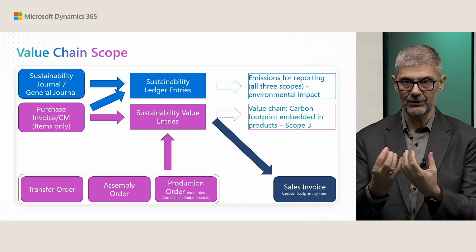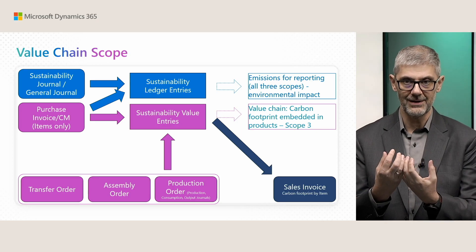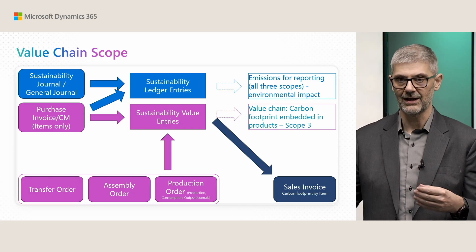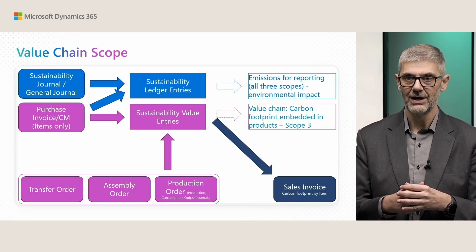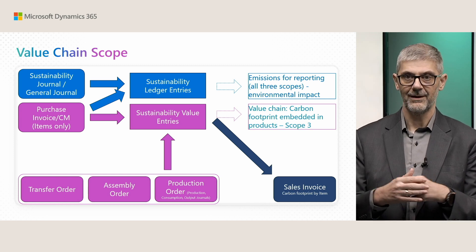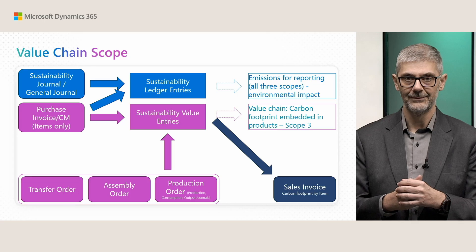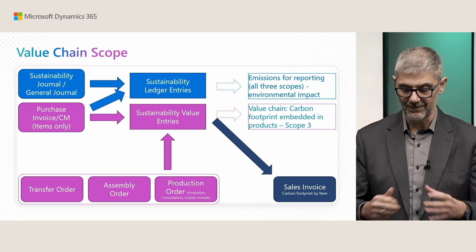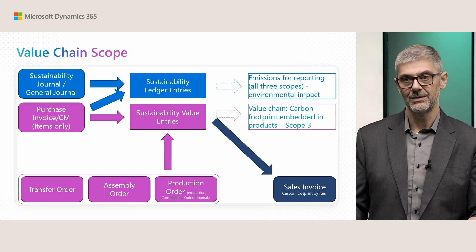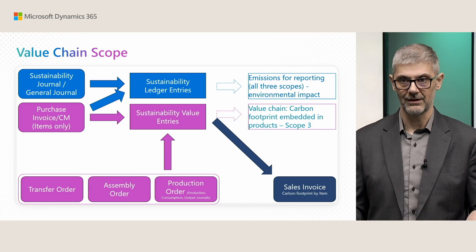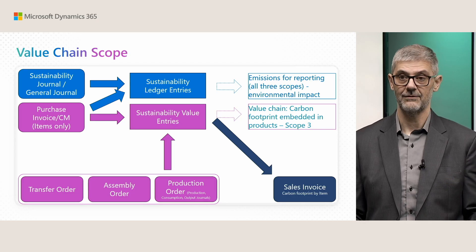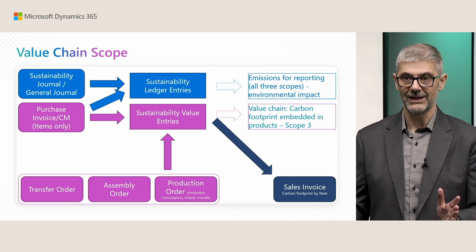You can track your emissions related to one specific item via your purchase document. Additionally, you can have further impact on these sustainability values from a transfer order, assembly order, or production order — so you can calculate new values for your finished goods, for example. Once you have all this impact with all the emissions, total emissions will be shown on a sales invoice. In this moment we do not have printouts for the sales invoice, but you can find this information on your posted sales invoice.